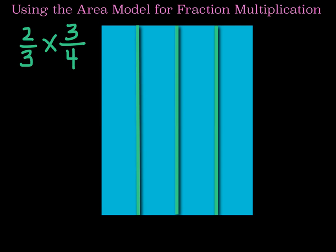Then we are going to shade three-fourths of the rectangle. There's one-fourth, two-fourths, and finally three-fourths. The next step is to divide this rectangle horizontally into thirds because that is the denominator of the first fraction. When we are done, it will look like this.